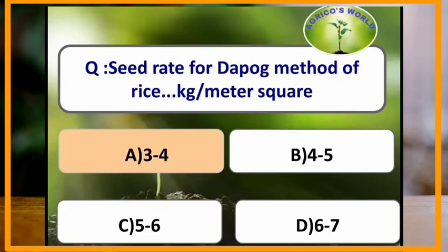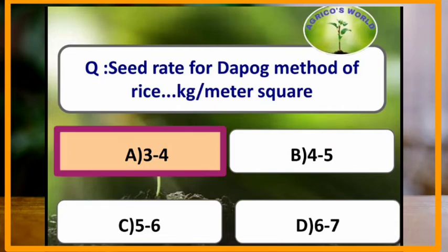Seed rate for the Dapog method of rice is how many kg per square meter? Seed rate in the Dapog method of rice is 3 to 4 kg per square meter.